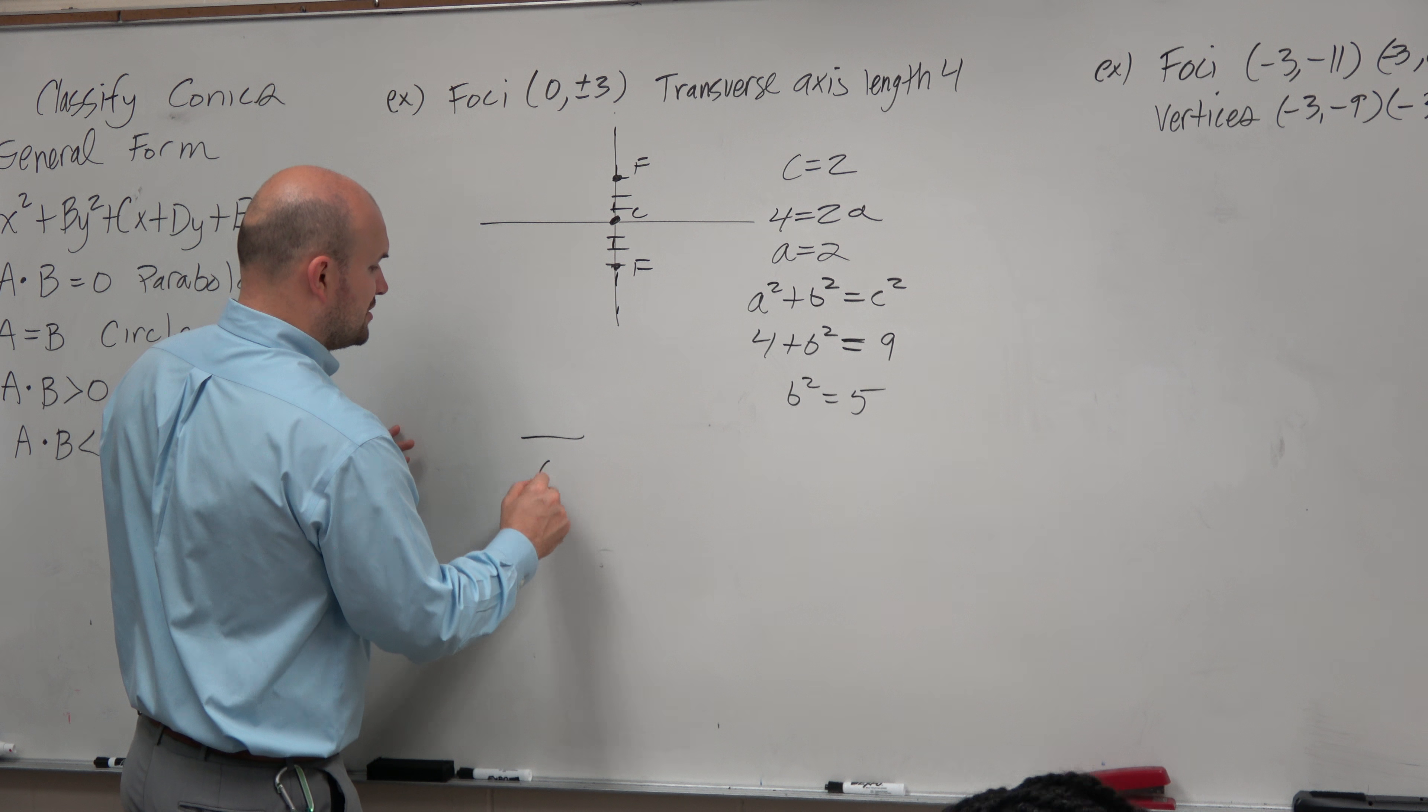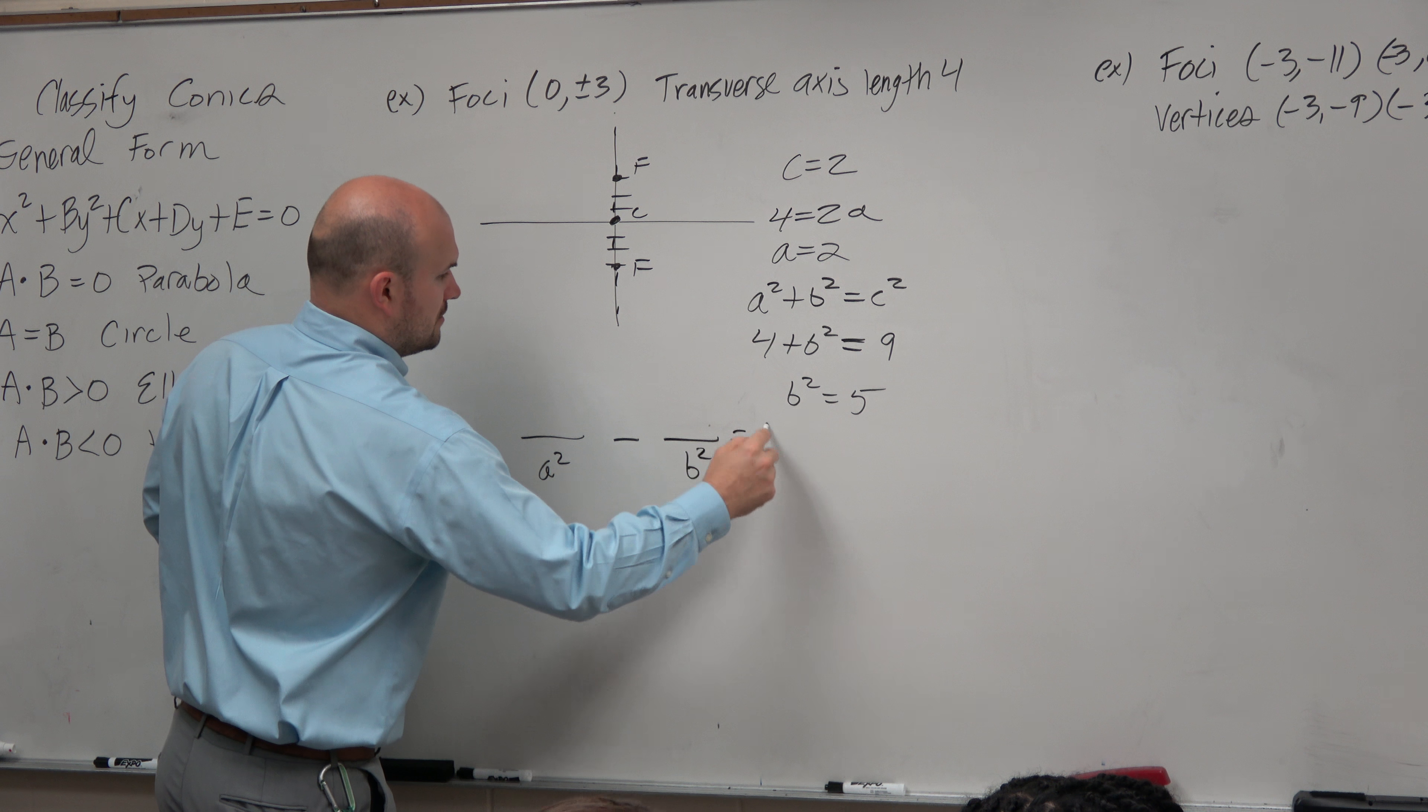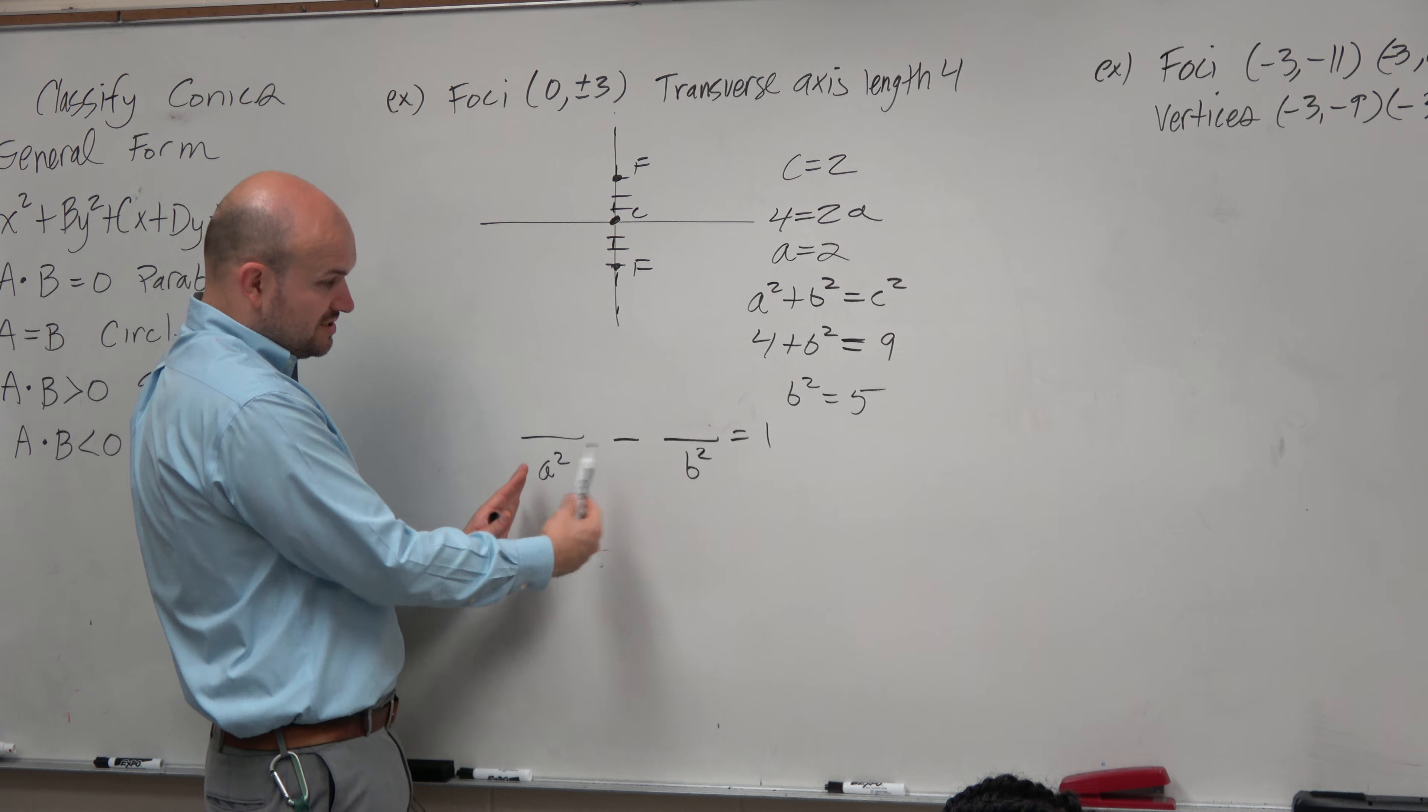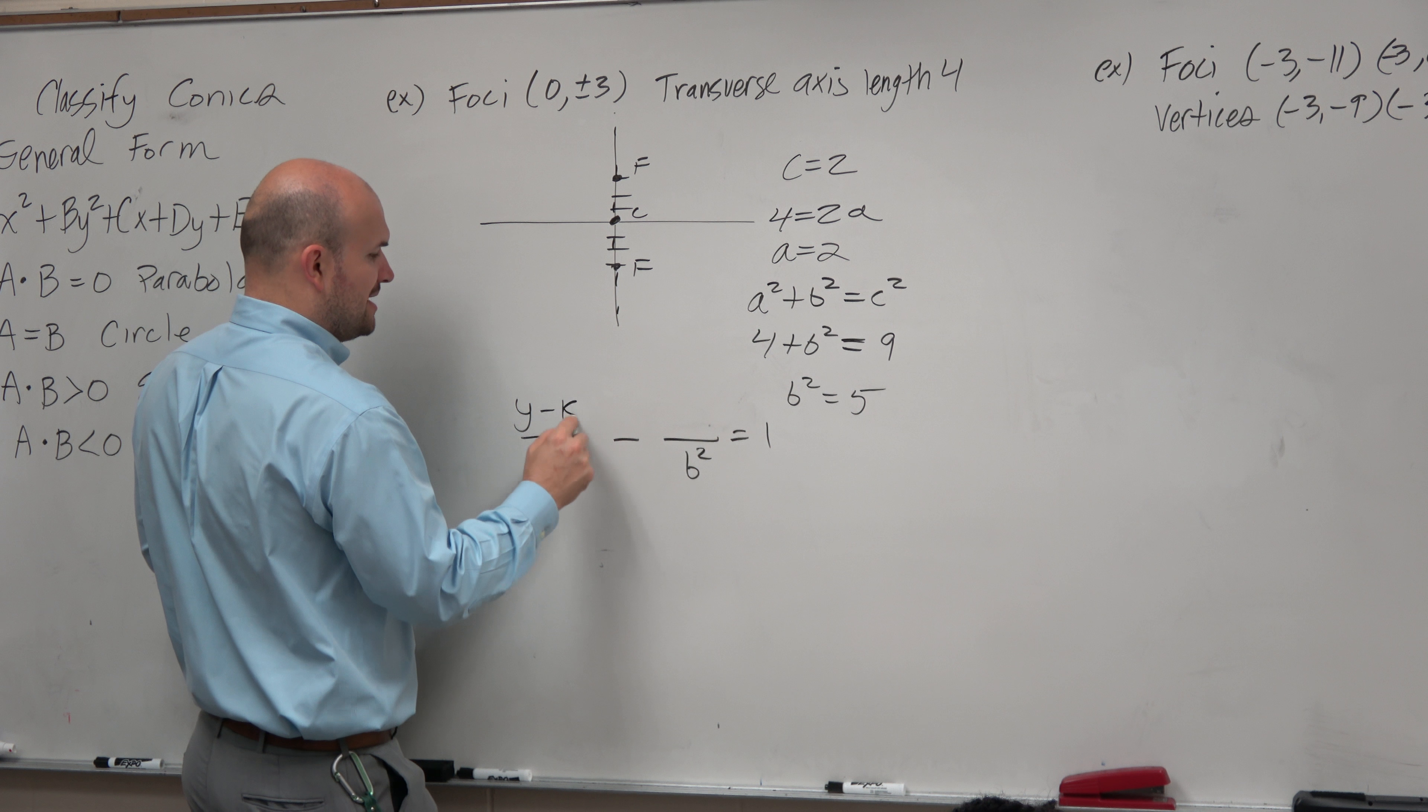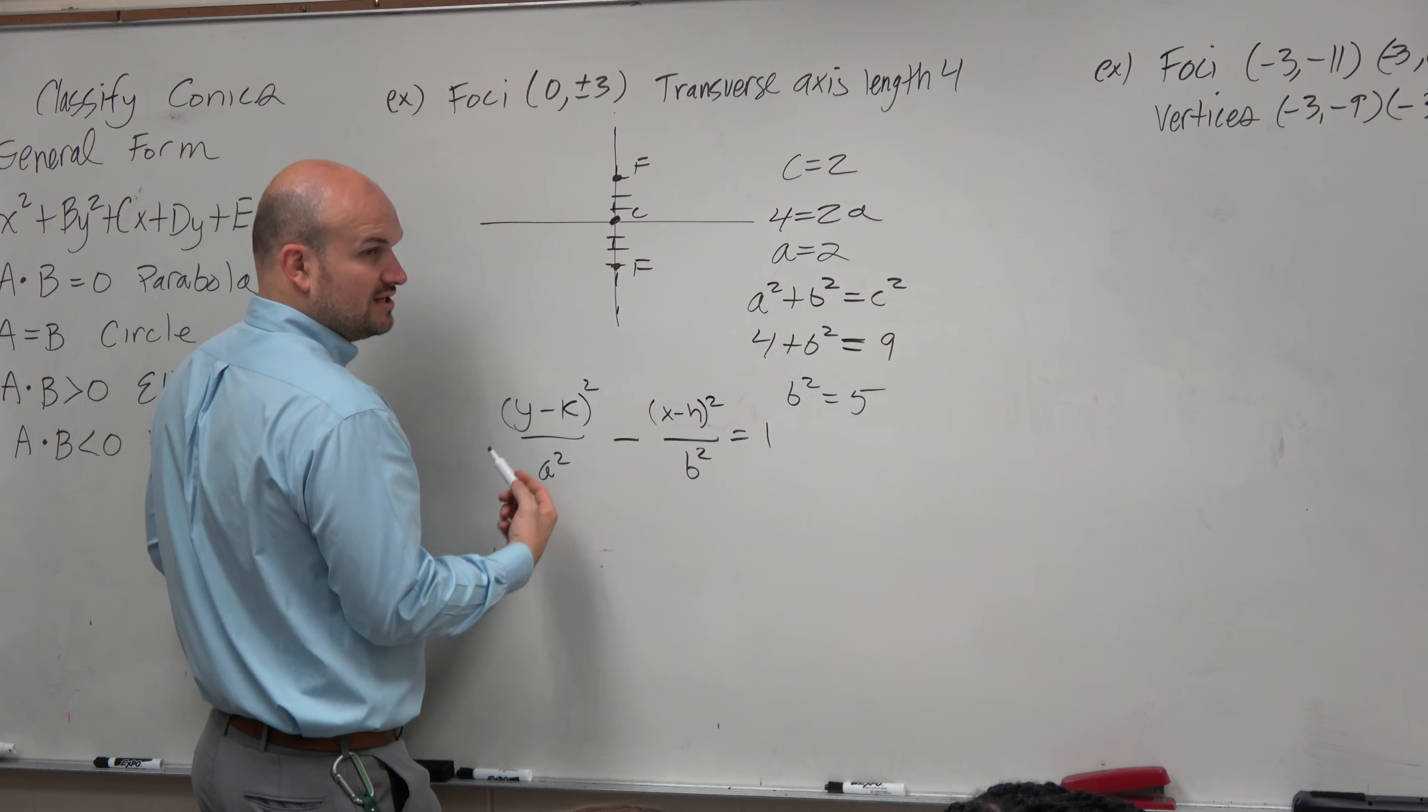So remember, your denominators look like this, right? You guys can just kind of keep that as your stack for your hyperbolas. Your denominators are always in the form your a squared minus your b squared. And then, since I have a vertical transverse axis, this is going to be y minus k squared, and then x minus h squared. So it's a little different than hyperbolas.